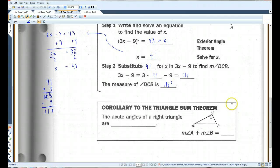A corollary to the triangle sum theorem, the acute angles of a right triangle are complementary. Which makes sense because if all of these angles add up to 180 and this angle is 90, obviously these two have to add up to 90 to make all the angles add up to 180. You can kind of tell that this is an extension of the triangle sum theorem.